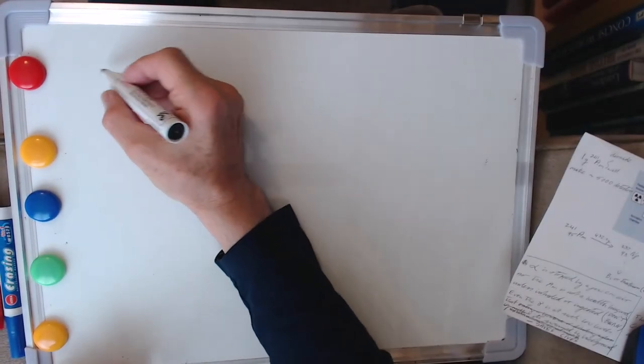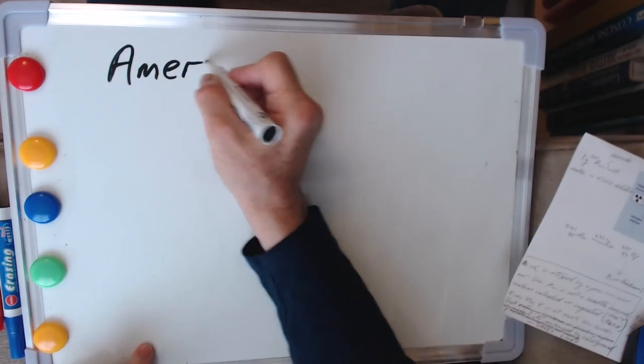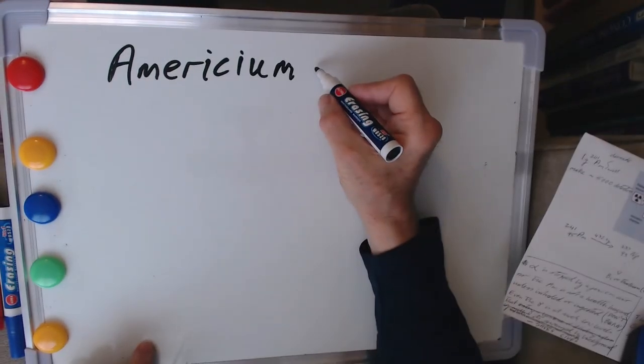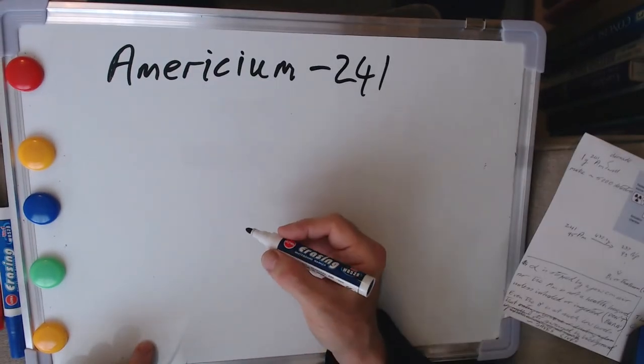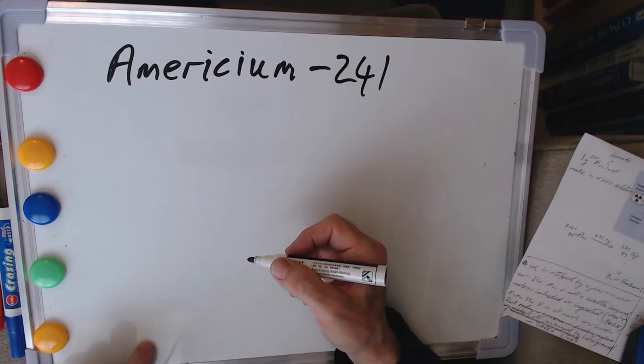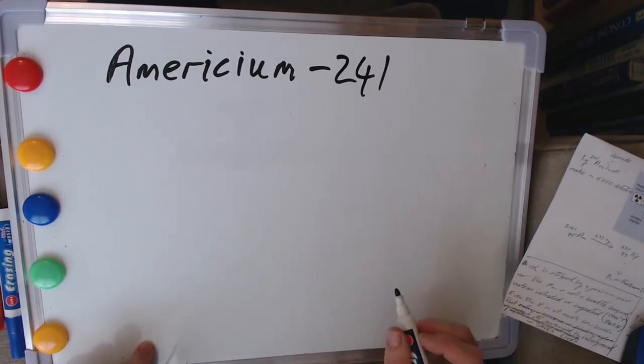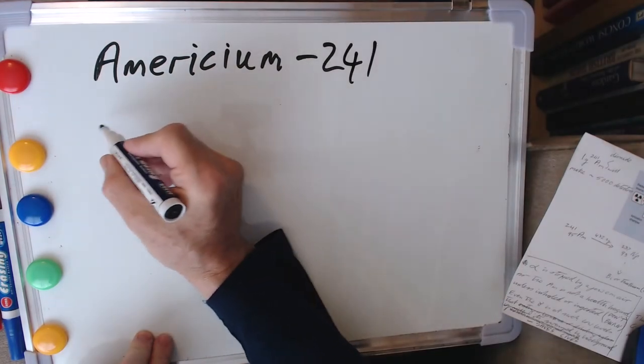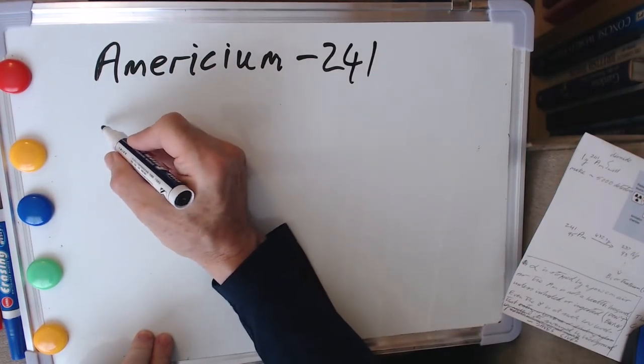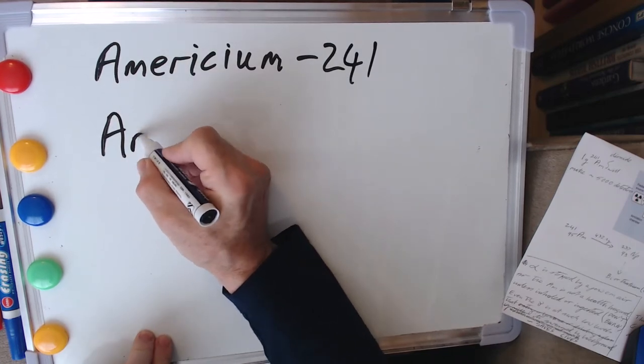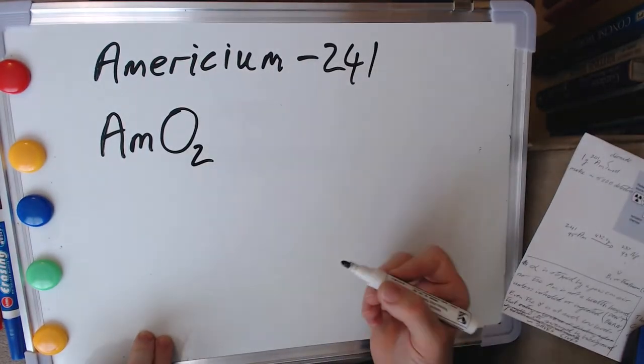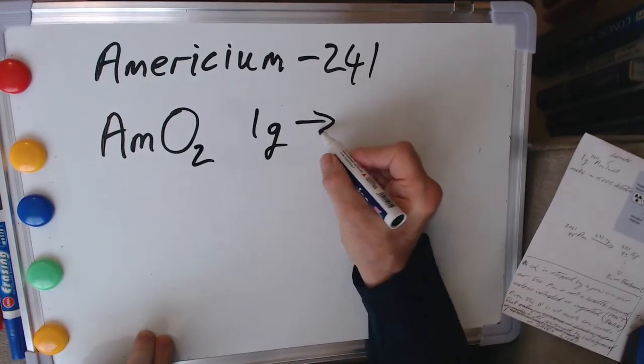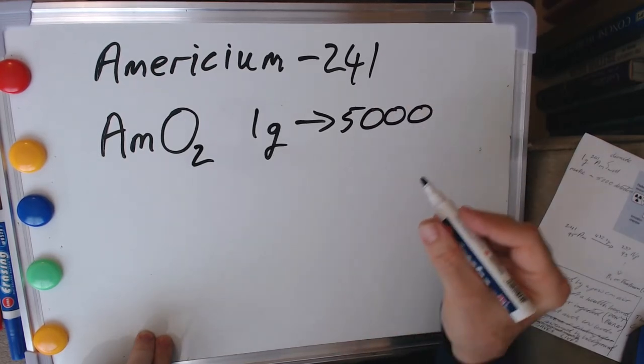So let's have a look at our americium as it appears in our smoke detector in slightly more detail. So this is a particular isotope, remember, americium-241. Now I told you there wasn't very much in your smoke detector and in fact there's really nothing in there at all in terms of measurable amounts or anything measurable on scales that we've got. And it appears in there as an oxide. It's actually americium dioxide, AmO2.